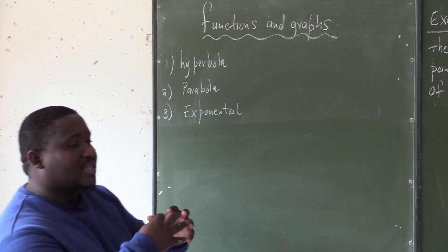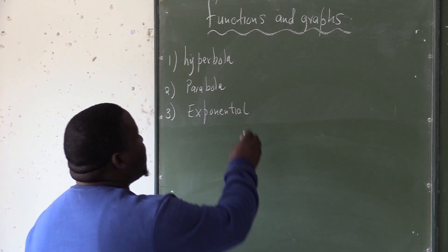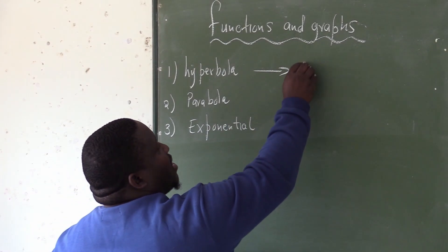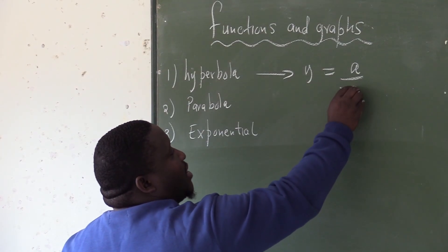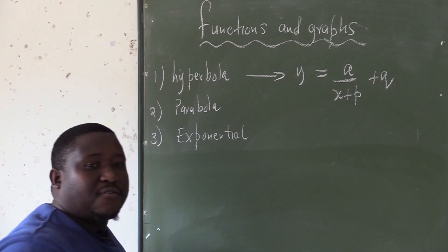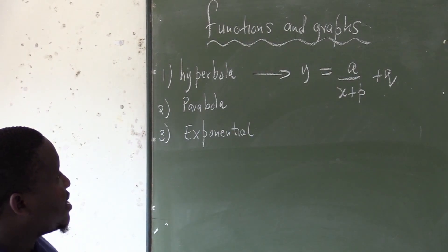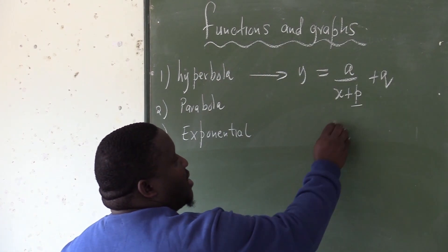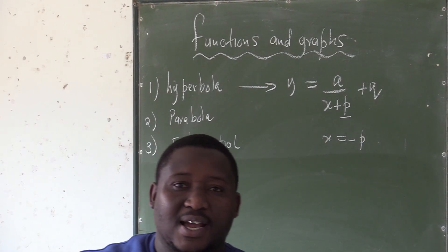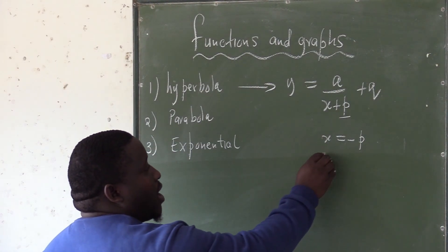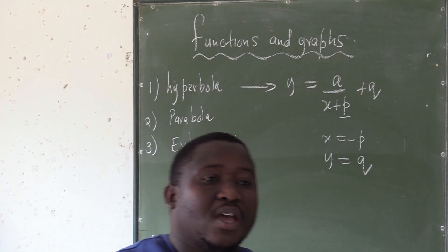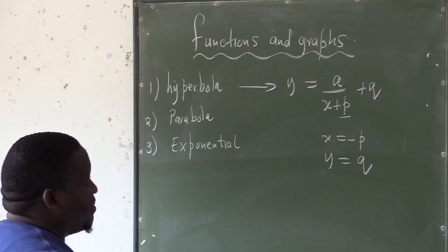The hyperbola has a standard form that one has to know. The standard form of the hyperbola is always given as y equals to a over x plus p, plus q. This is the standard form of any hyperbola, where x equals to minus p gives us the equation of the vertical asymptote, and y equals to q gives us the equation of the horizontal asymptote.